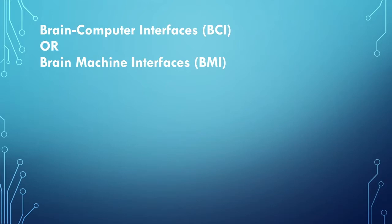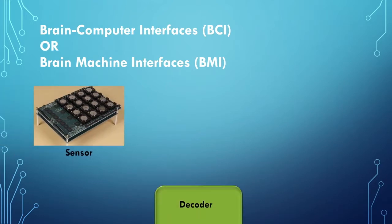BCI or BMI is a communication method that facilitates control of external devices using neural information recorded from the brain. The three main components in any BCI are sensor, decoder, and effector.